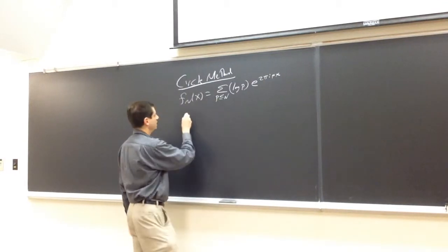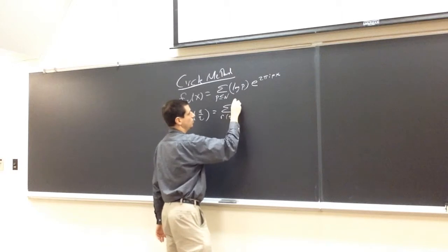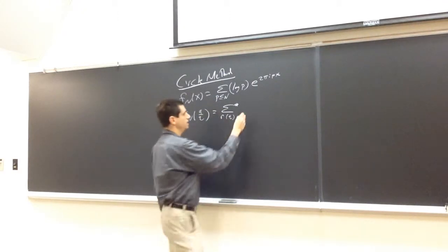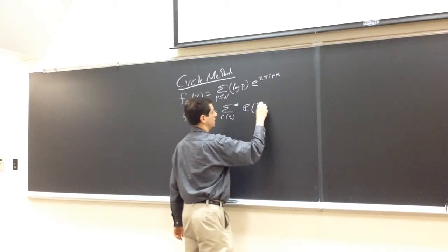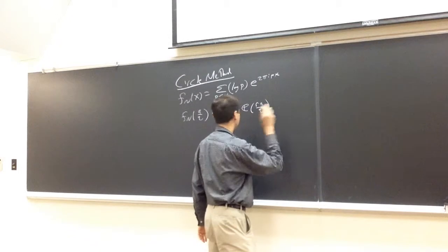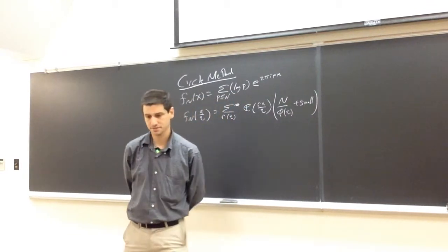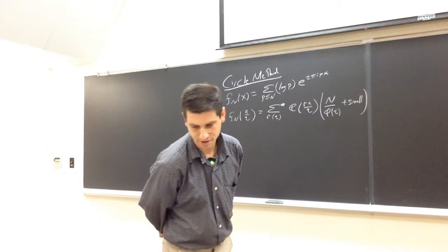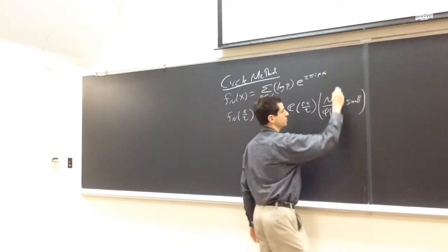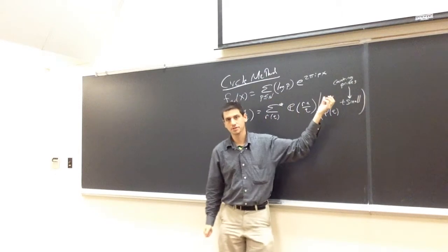So f_n(a/q) looks like the sum over r mod q — with a star to remind ourselves it's just over r relatively prime to q — times e^{ra/q}, and then the sum over the log p's, which is essentially n over φ(q) plus something small. The question is how small is 'small,' and this is where we count primes in arithmetic progressions. The better we can count primes, the better bound we have for the small term.